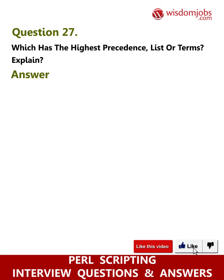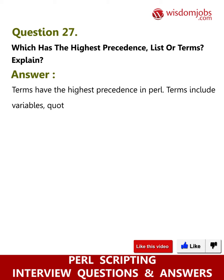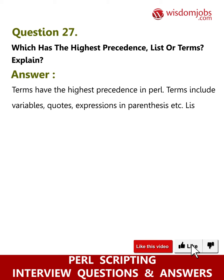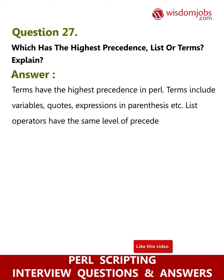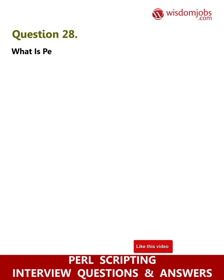Question 27: Which has the highest precedence — list or terms — explain? Answer: Terms have the highest precedence in Perl. Terms include variables, quotes, expressions in parentheses, etc. List operators have the same level of precedence as terms; specifically, these operators have very strong leftward precedence.